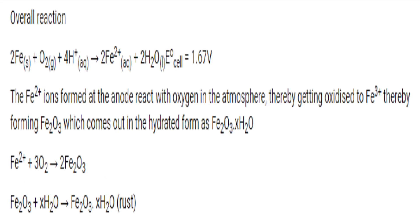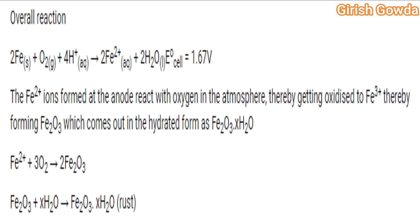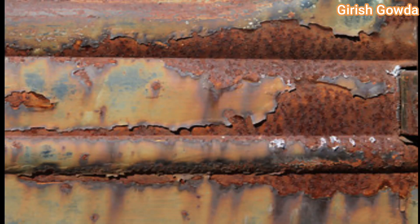The ferrous cations present near the anode once again react with atmospheric oxygen and get oxidized to ferric ions by donating one more electron, thereby forming iron oxide as shown. This iron oxide in hydrated form can be written as Fe₂O₃·H₂O, which is the chemical formula for rust. This rust is flaky and gets separated from the iron substrate, thereby making the iron core vulnerable to more oxidation.